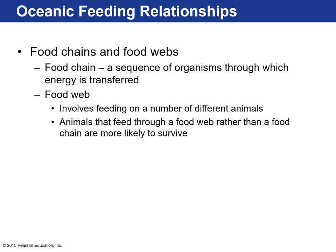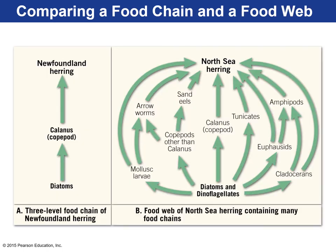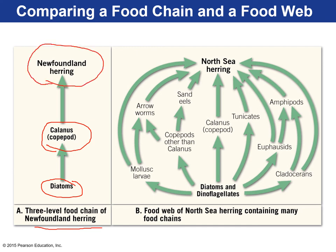A food chain is a sequence of organisms through which energy is transferred — showing direct linear feeding relationships among a few different species. For example, a three-level food chain: diatoms as primary producers are eaten by copepods which are zooplankton, and the copepods are eaten by the Newfoundland herring.